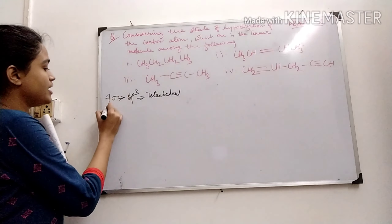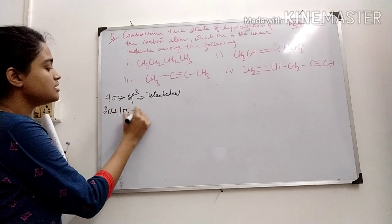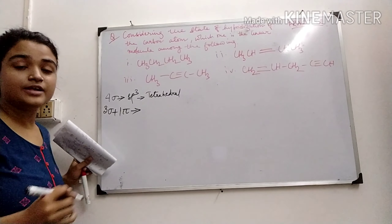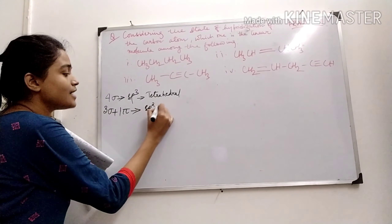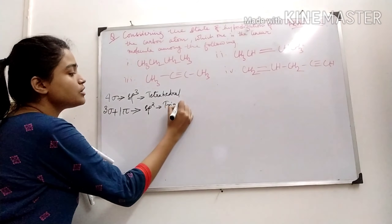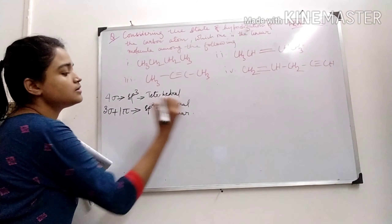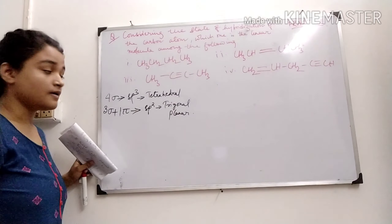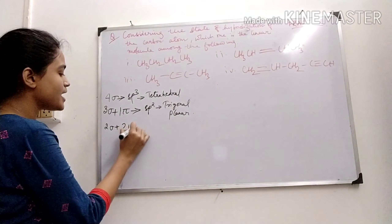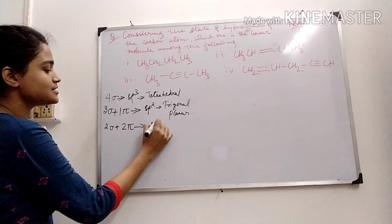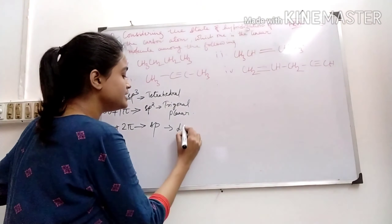When 1 pi bond is present, the hybridization changes to SP2, and the geometry is trigonal planar. When there are 2 sigma and 2 pi bonds, the hybridization is SP, and that gives a linear geometry.